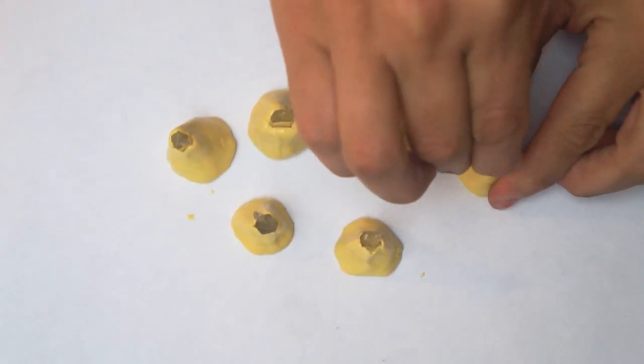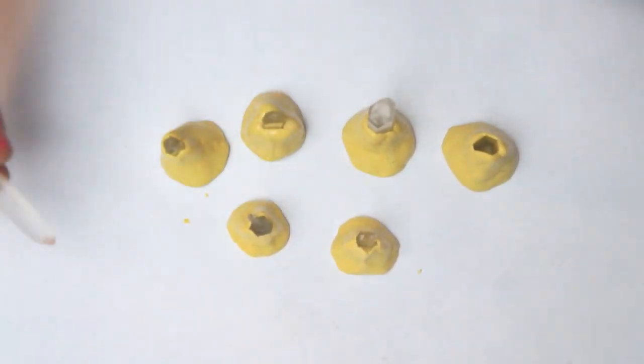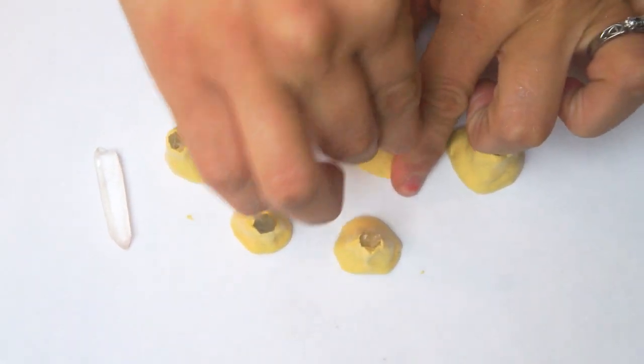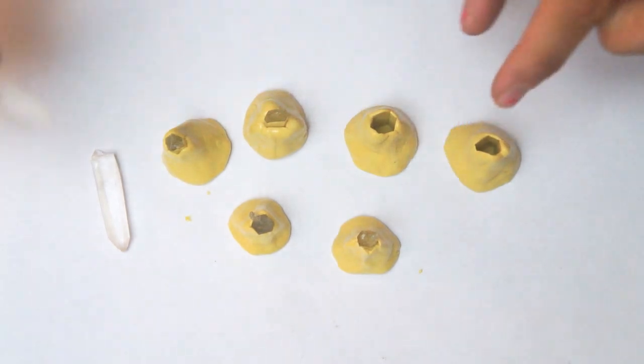Okay, so once your putty has hardened, you can take out your crystal points and what's left is the mold of those points.